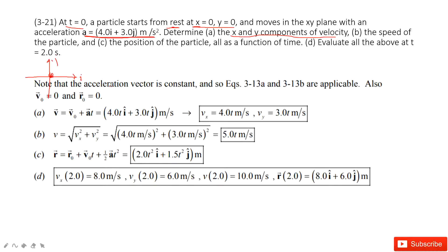We can write ax is 4, ay is 3. Then we use initial velocity plus acceleration times t. We can find the velocity in two directions, i and j, two components. We'll find vx is 4t and vy is 3t.